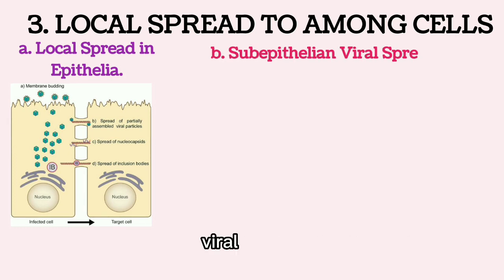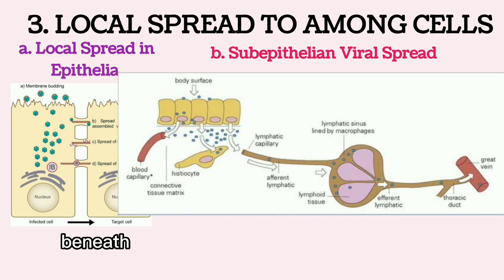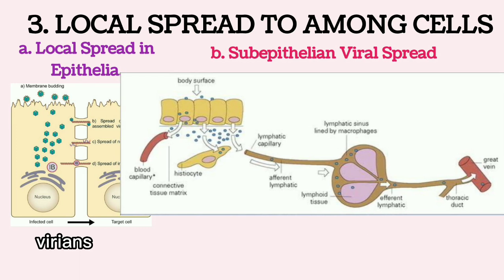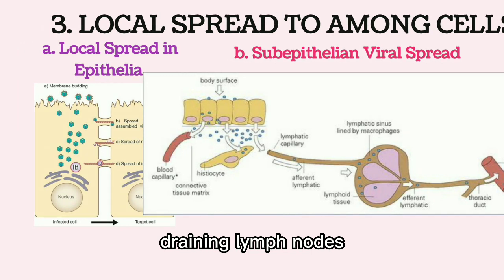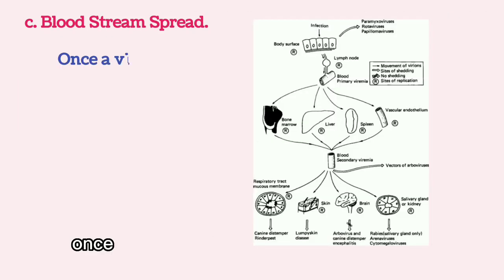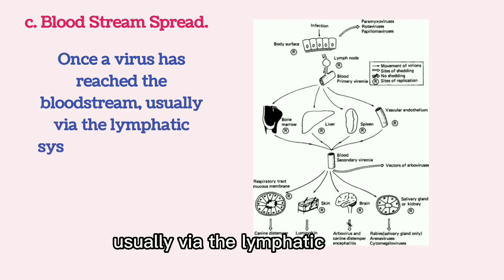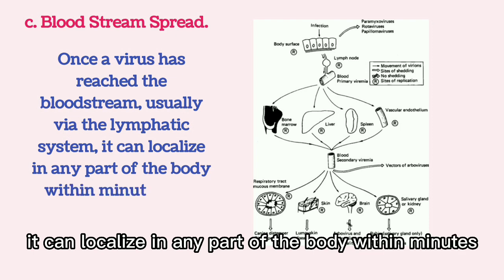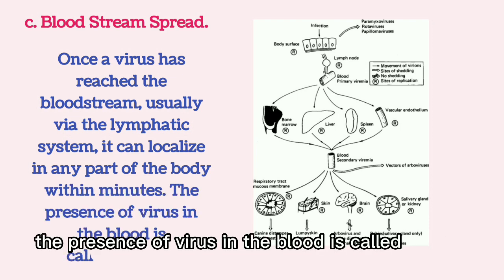Subepithelial viral spread: Viruses can enter the network of lymphatics beneath all cutaneous and mucosal epithelia. Virions entering the lymphatics are carried to local draining lymph nodes. Bloodstream spread: Once a virus has reached the bloodstream, usually via the lymphatic system, it can localize in any part of the body within minutes. The presence of virus in the blood is called viremia.